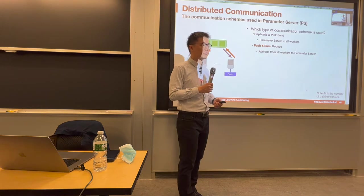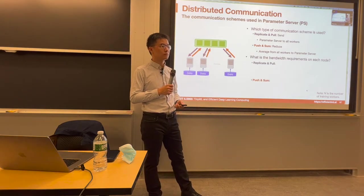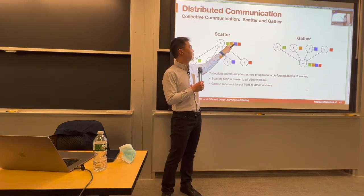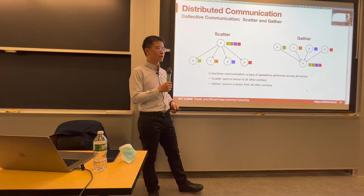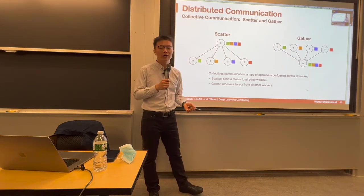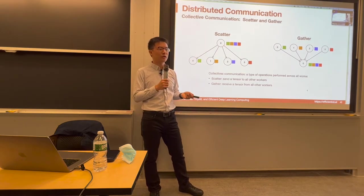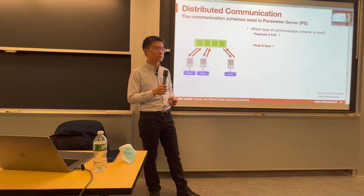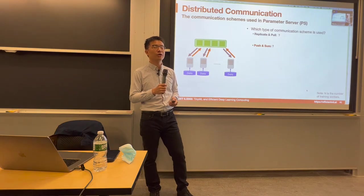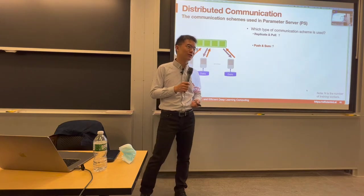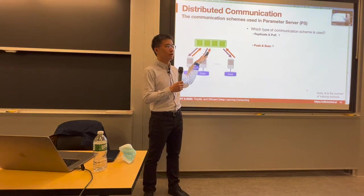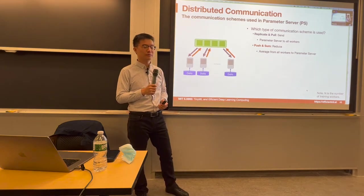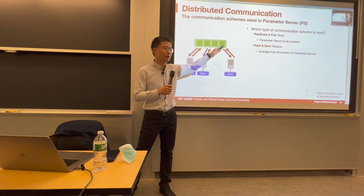A student asks about the difference between send and scatter. For scatter, you're sending different elements to different nodes — four components distributed to four workers. For send, you're sending the same data. Here we send the same model from the parameter server to different workers, so we use send rather than scatter. Scatter distributes different elements; send sends the same model across different workers.